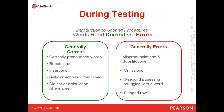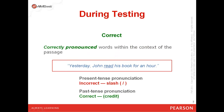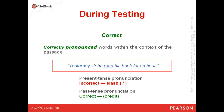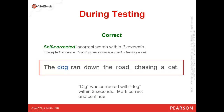Let's go over some general scoring considerations for what's correct and not correct in the oral reading measure. If a word is pronounced correctly within the context of the passage, you give the student credit. For example, if the student said 'yesterday John read his book for an hour,' that's considered correct. If it's pronounced differently, you would mark it incorrect. If students self-correct incorrect words within three seconds, this is also considered correct.